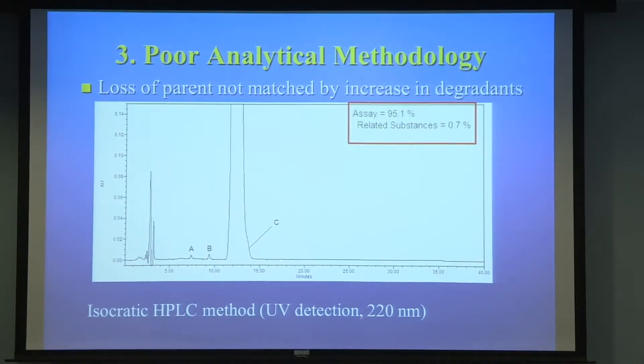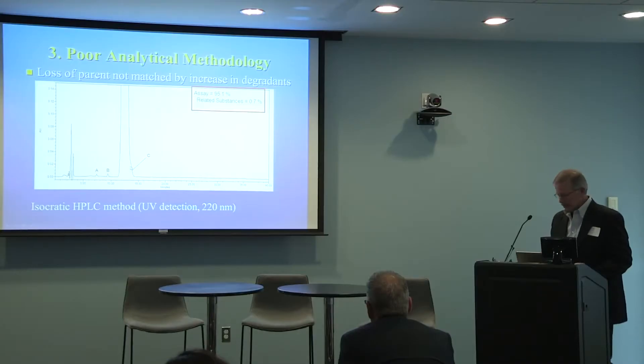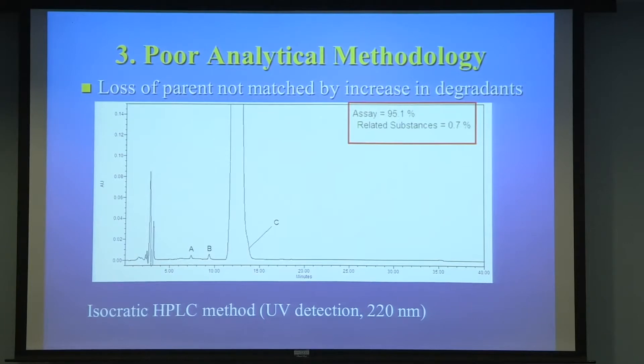We had a drug that was on the market, it had a USP method, and it was an isocratic HPLC method with UV detection at 220 nanometers. When we did the stress testing — because we were developing, we went from a mixture of the R and S to just the R — we had to develop a new method and look at new stress testing. When we did that, we found out that under one condition, we had 5% degradation and only 0.7% increase in related substances. We weren't matching the amount of decrease with an increase, and we noticed a shoulder on this USP validated method with only two degradation products.